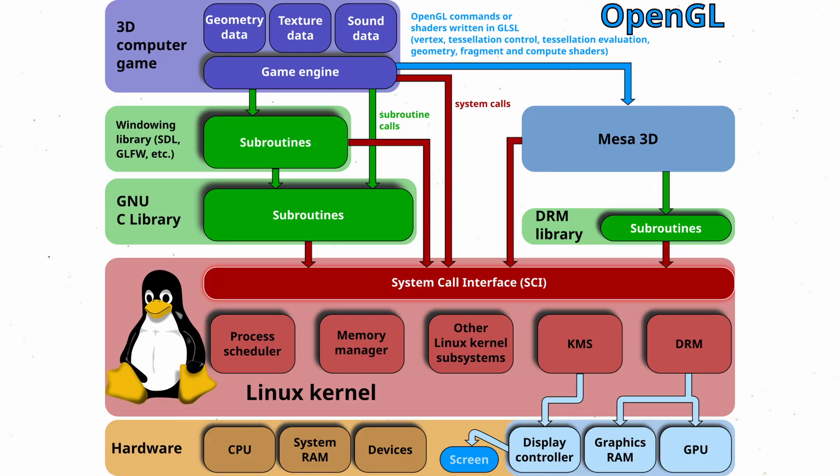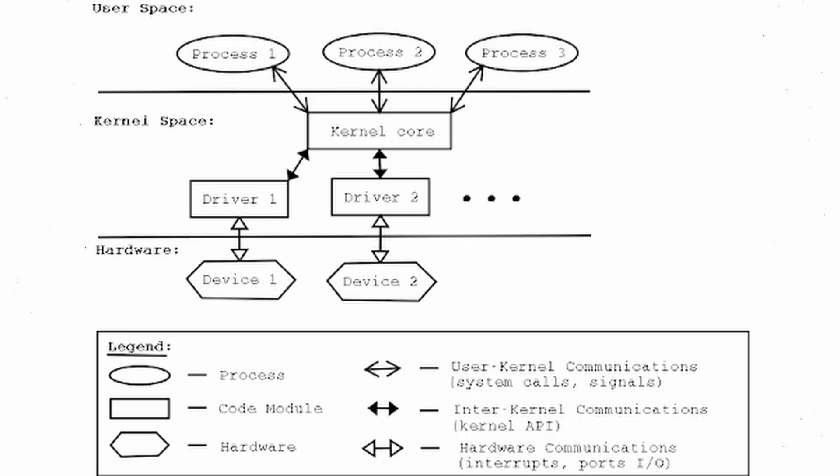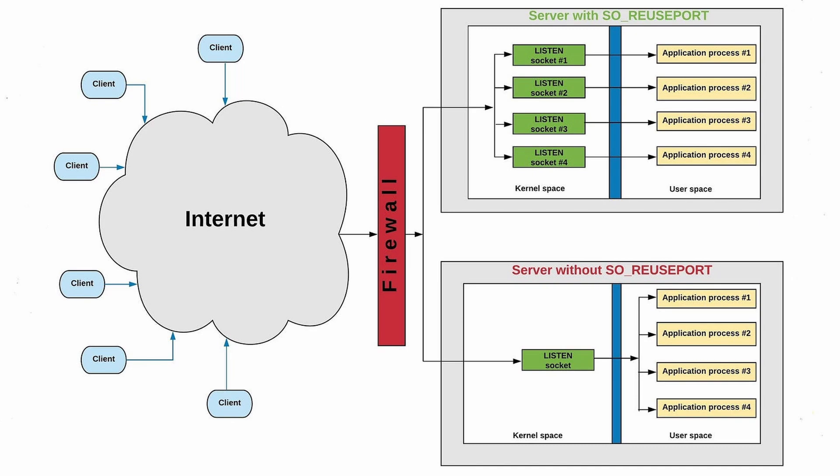Whenever you download a game, you're retrieving an executable from the internet, and this executable wants to make changes to your machine. It isn't a kernel process at all — it would technically be a user space process that would ask the kernel processes nicely if it can make some changes. These requests are usually very specific API calls to the kernel called system calls. System calls can be as simple as opening a file from flash memory, or something networking-related like starting a web server or client, which would be called a socket.